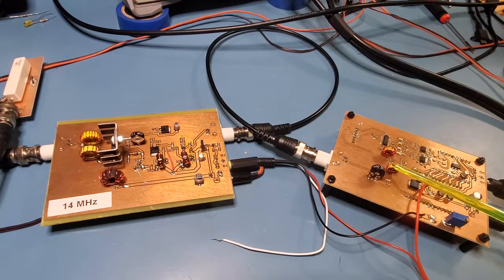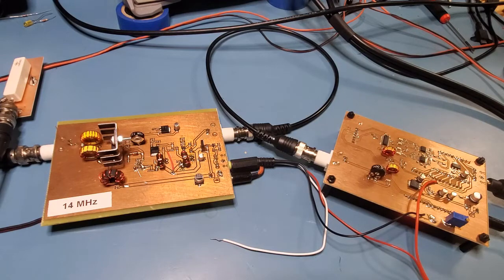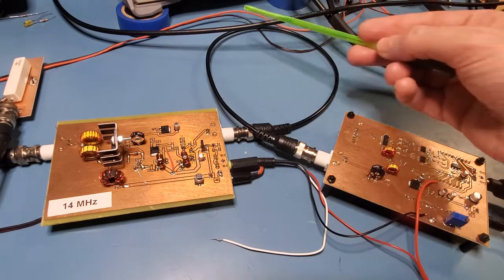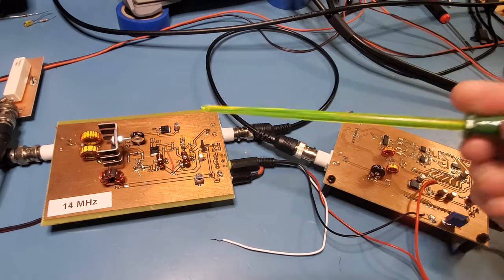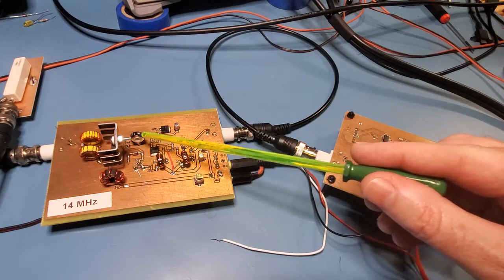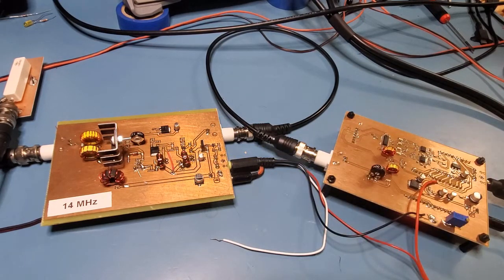I've got the mixer output level, which I can adjust here. I've got the audio input level, which is just off screen here, coming from the signal generator, and then finally I've got the bias to the gate of the IRF510 that I've got in the amplifier. So I'll just go through and adjust those and see the effect on the output signal.